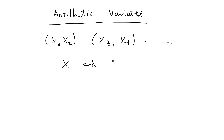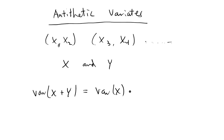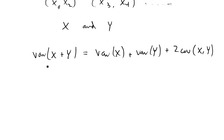As a quick example using the definition of variance: if you have two random variables x and y, the variance of x plus y equals the variance of x plus the variance of y, plus two times the covariance of x and y if they are not independent. So if the covariance of x and y is negative, that term reduces the overall variance. This is the general idea you exploit using antithetic variates.